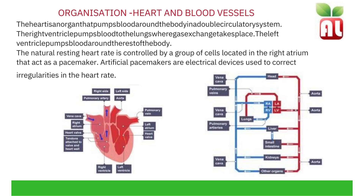Heart and blood vessels. The heart is an organ that pumps blood around the body in a double circulatory system — a system of oxygenated and deoxygenated blood. The right ventricle pumps blood to the lungs where gas exchange takes place. The left ventricle pumps blood around the rest of the body. The ventricles are the lower chambers of the heart and the atria are the upper chambers. The natural resting heart rate is controlled by a group of cells located in the right atrium that act as a pacemaker.